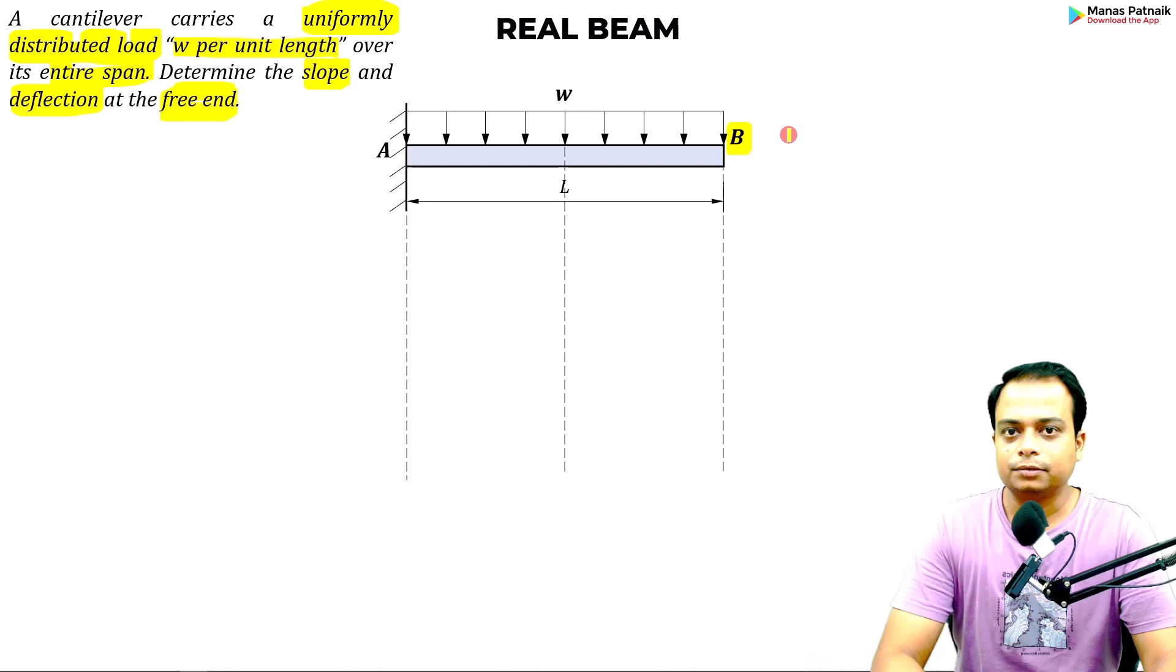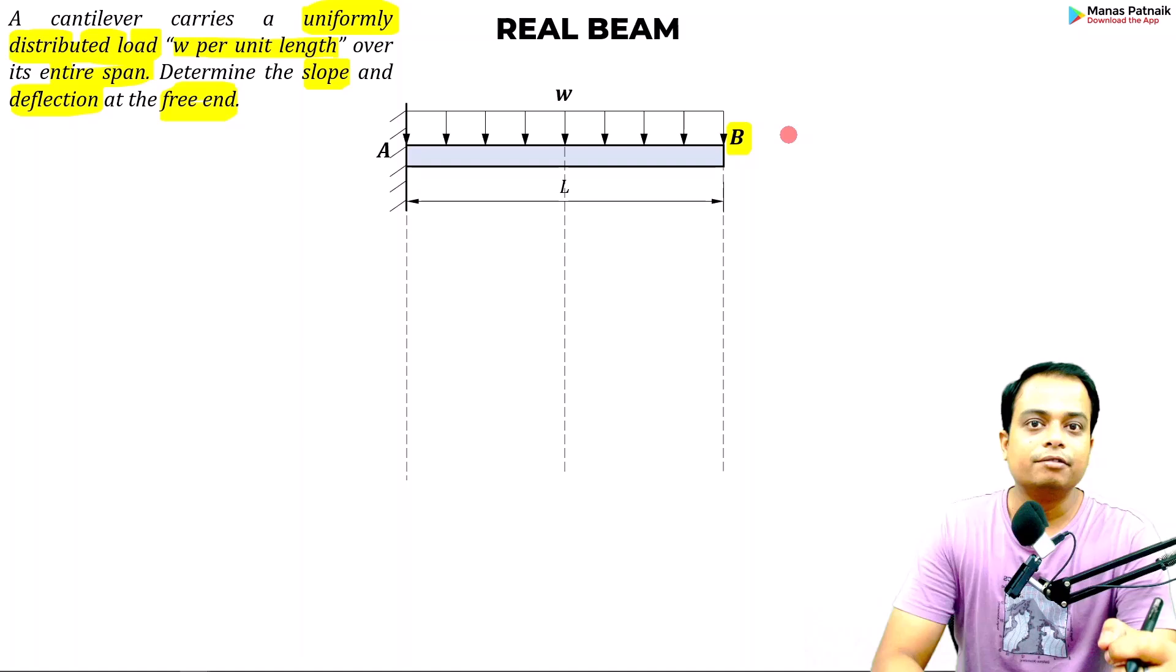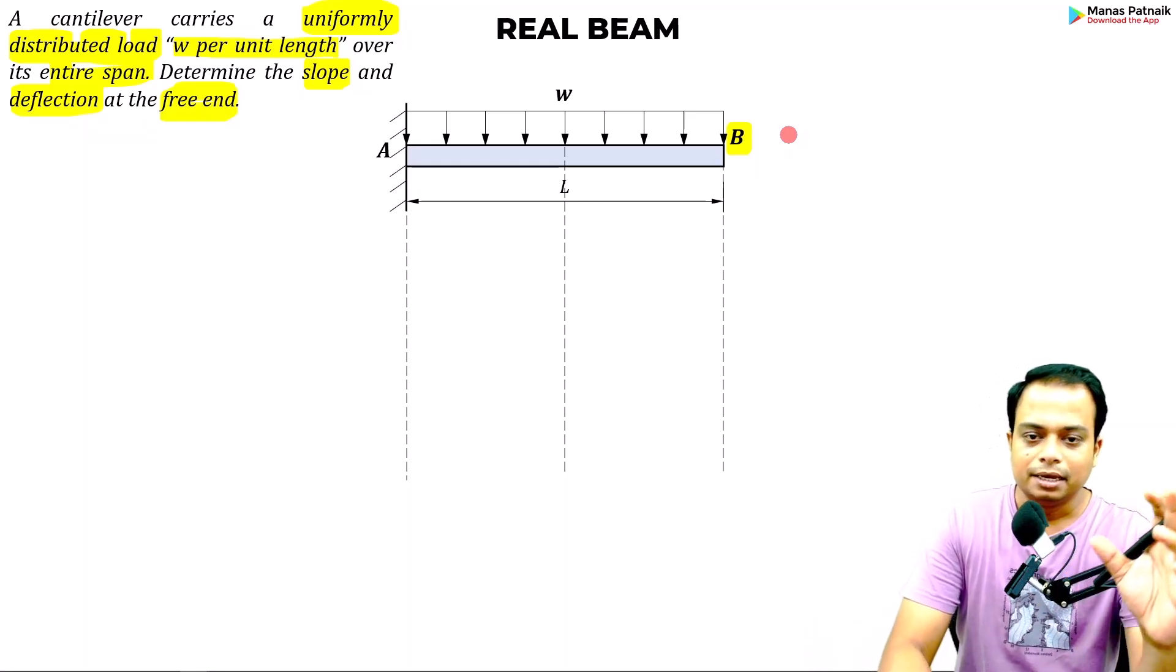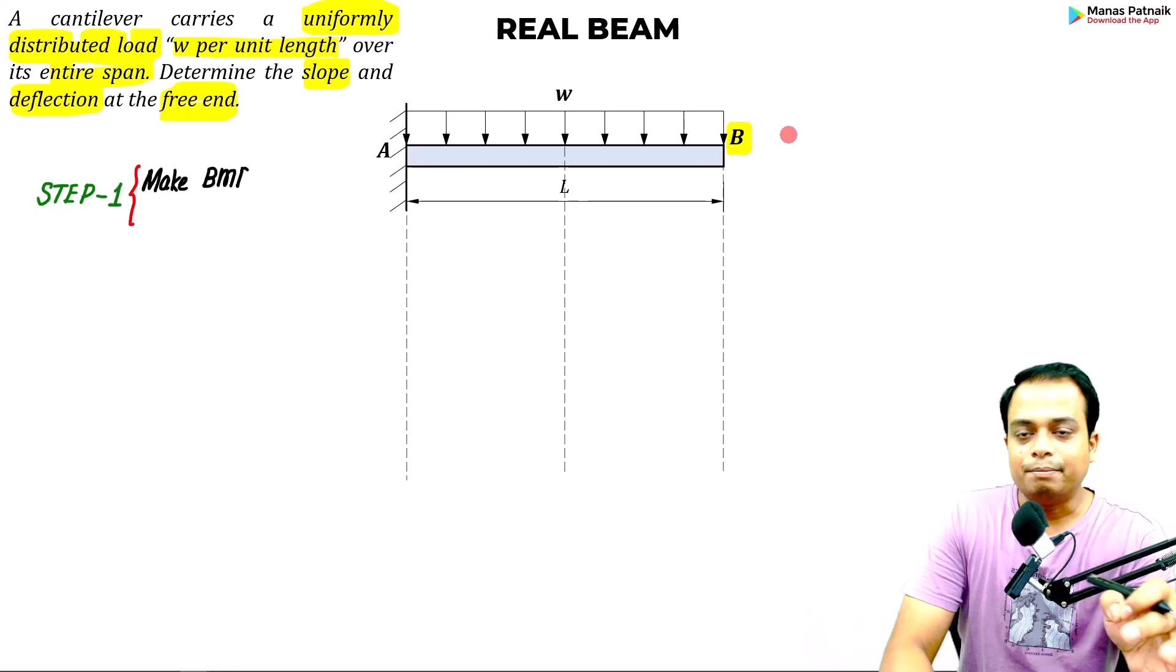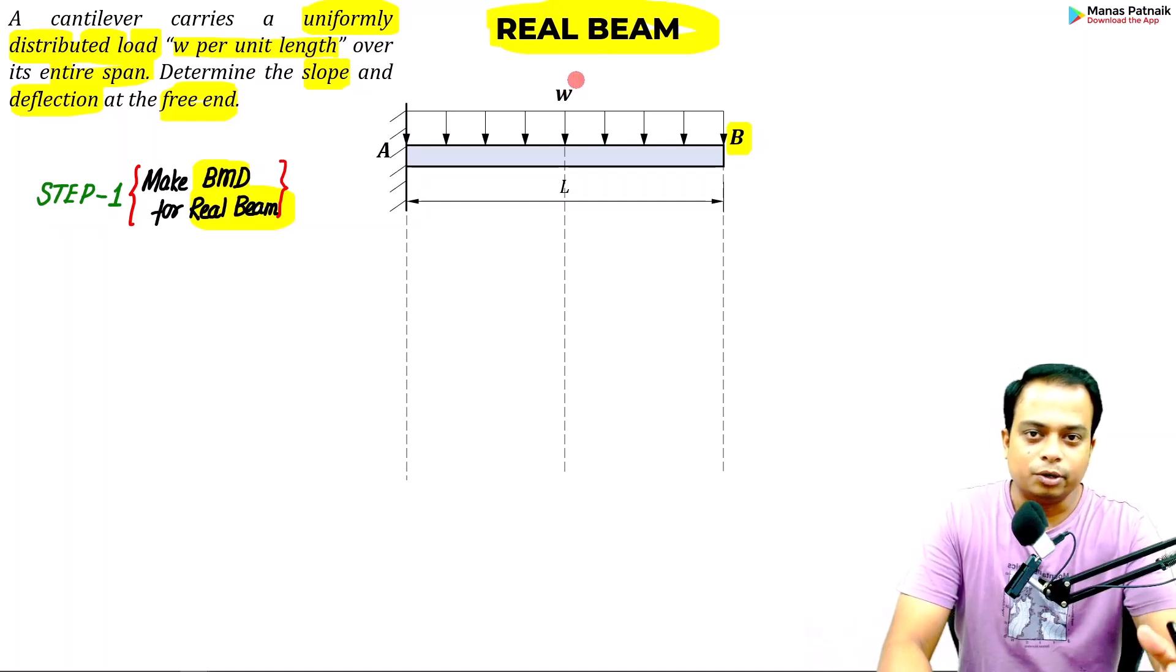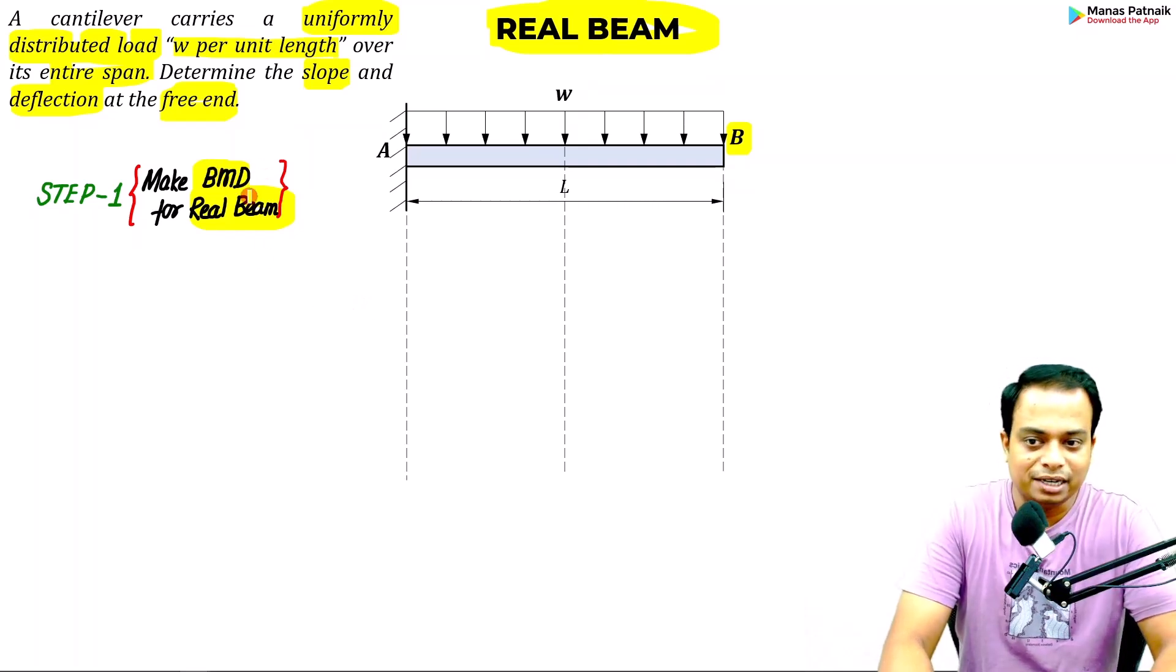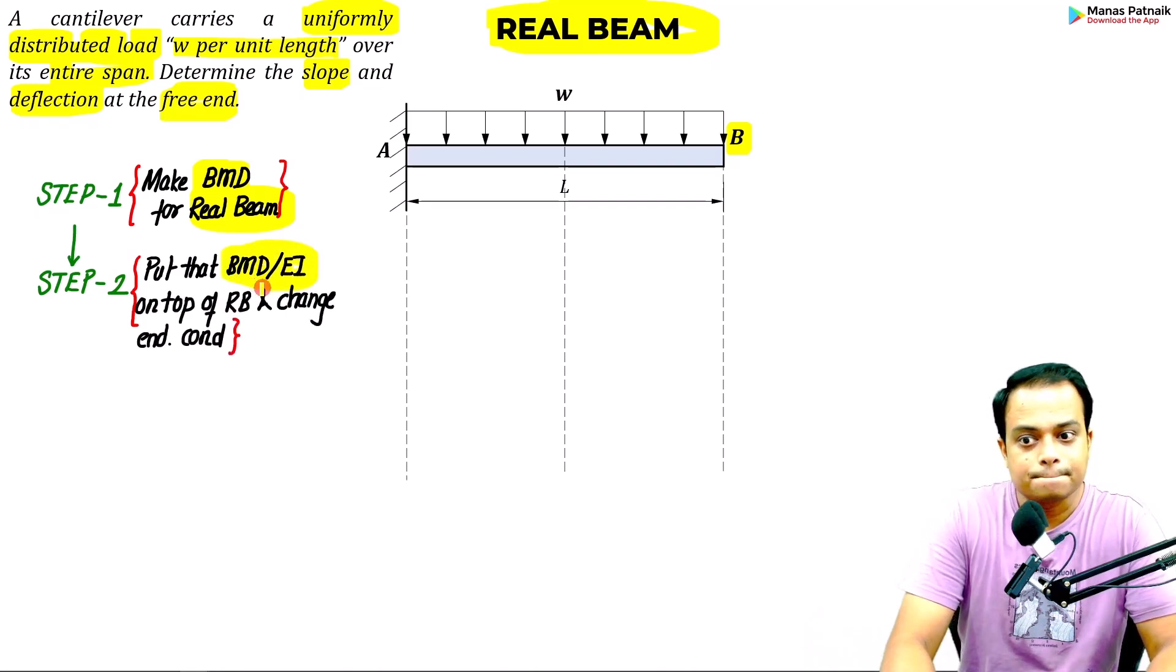Now whenever you start any problem based on deflection of beam, especially where you are applying the method of conjugate beam, you have to move forward in a stepwise manner. Number one, we are going to make the bending moment diagram for the real beam. In order to convert this real beam into a conjugate beam, there are certain modifications you need to make. You then divide that bending moment diagram by EI and put it on top.